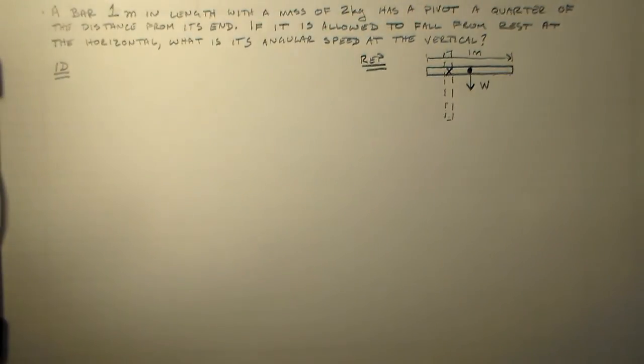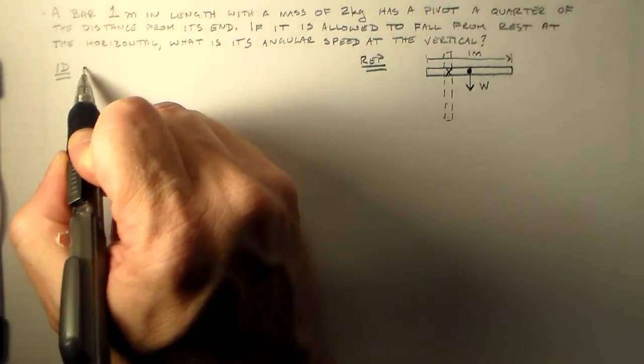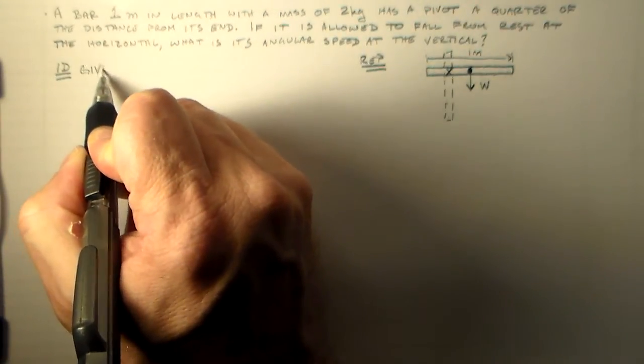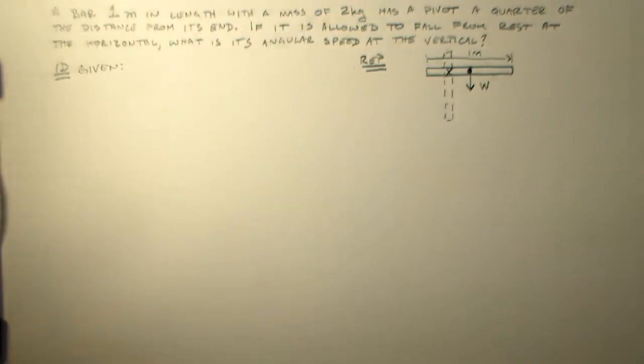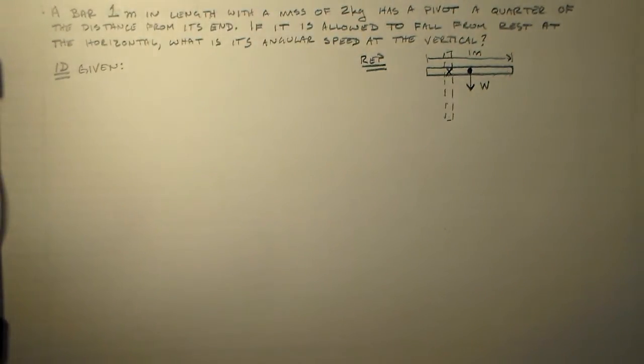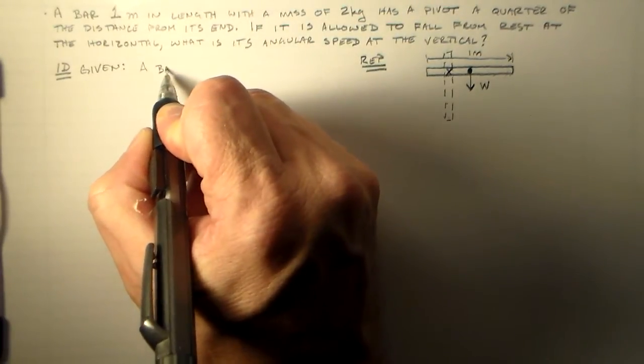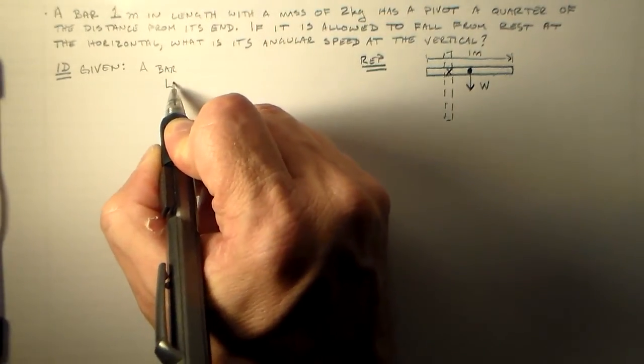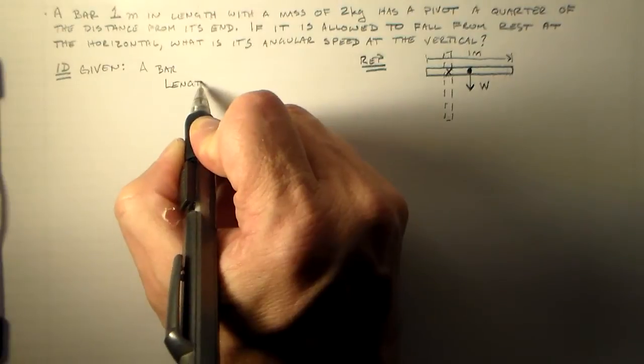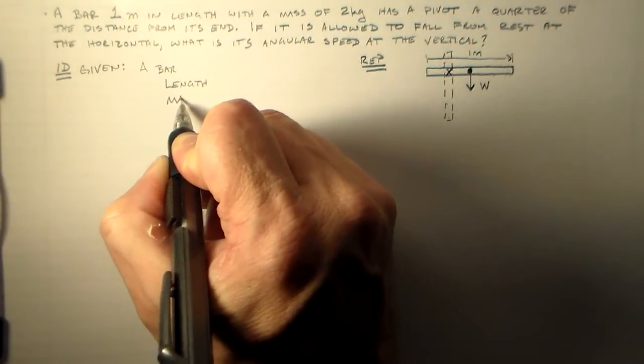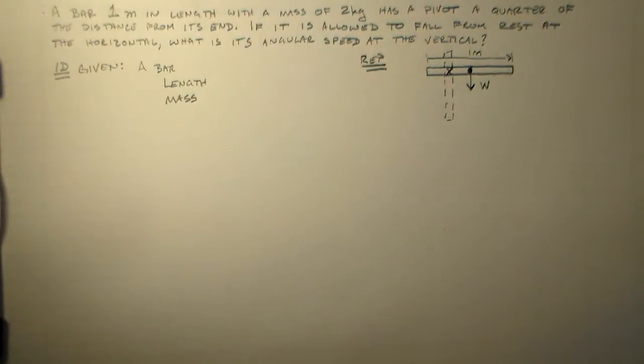Let's see how we're going to approach that. We want to identify what we know. We have a bar with a length and a mass, and we're going to allow it to fall from rest.